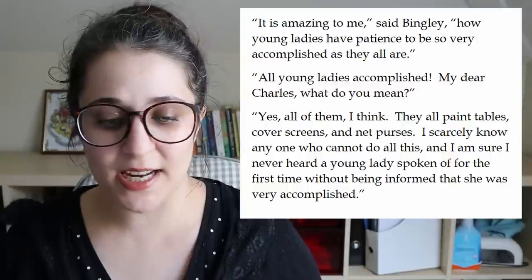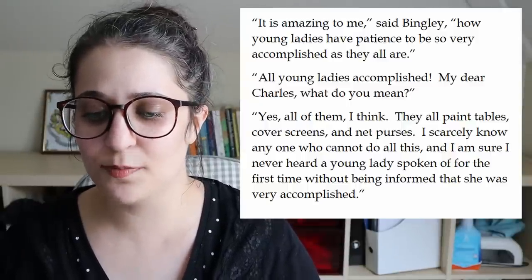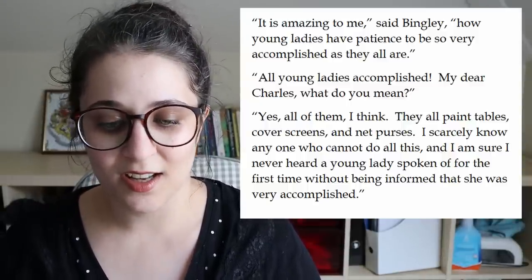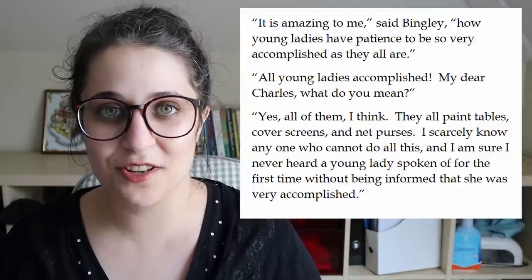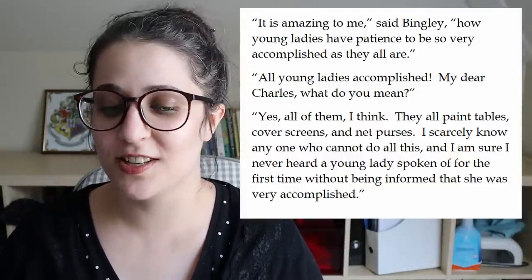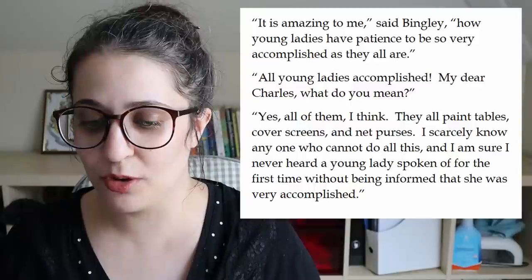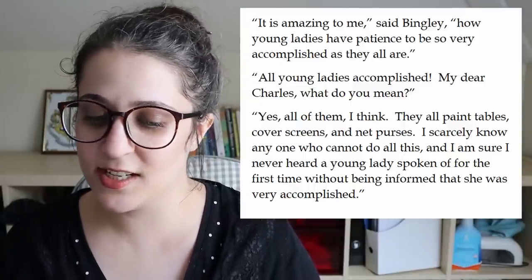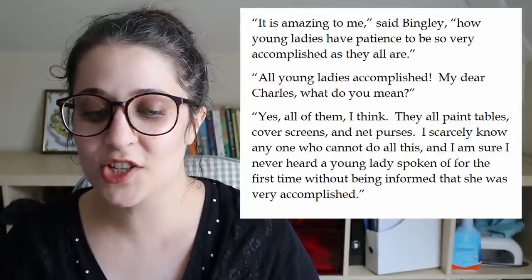But back to the musicians in Austen's novel, there is the one word that you will find a lot in her books to describe women in general and that is accomplished, as in accomplished young ladies. Here's one example from Pride and Prejudice and this is a conversation between Charles Bingley and his sister. It is amazing to me, said Bingley, how young ladies have patience to be so very accomplished as they all are. All young ladies accomplished? My dear Charles, what do you mean? Yes, all of them I think. They all paint tables, cover screens and net purses. I scarcely know anyone who cannot do all this and I'm sure I never heard a young lady spoken of for the first time without being informed that she was very accomplished.